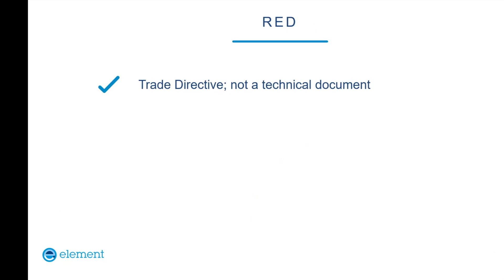The Radio Equipment Directive is a trade directive — it's not a technical document. If you start looking in the Radio Equipment Directive, you won't find terms like megahertz, dBm, or watts. You won't find tests, spurious emissions, ESD, frequency tolerance, or spectrum mask, and it doesn't even mandate that you test. The directive is a document which allows radio equipment to be placed freely on the European Union market and provides a harmonised approach to putting radio equipment on the market.